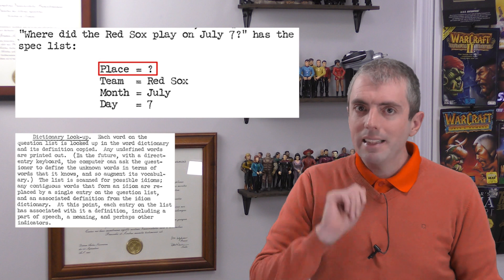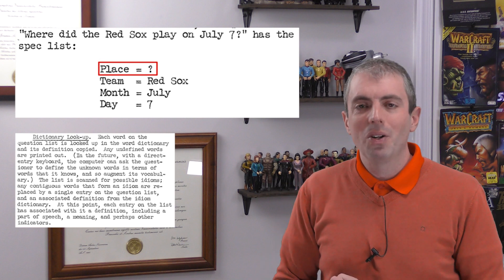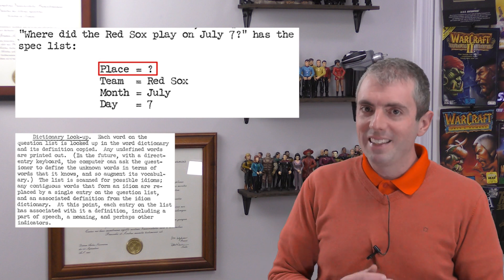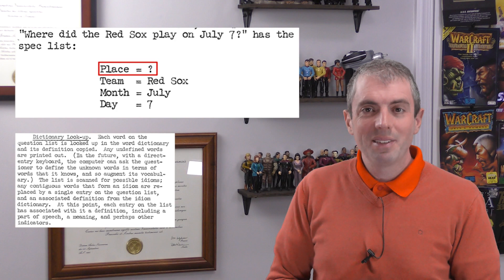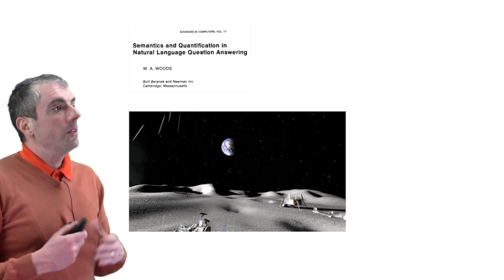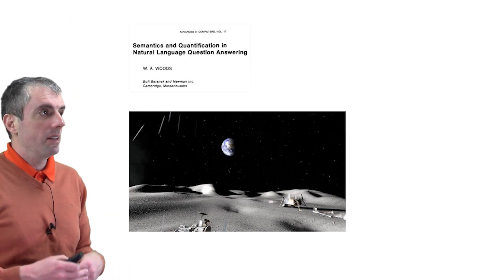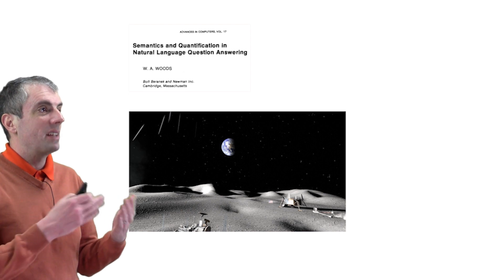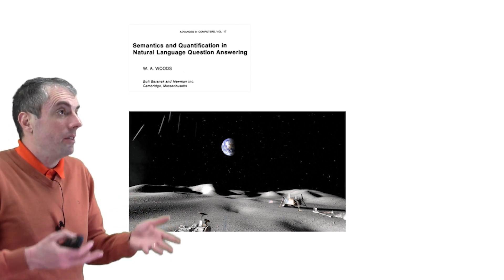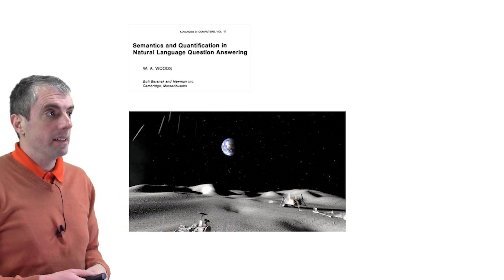To get to the next step, we need to turn to a system called LUNAR, which, as you might guess, was answering questions about the moon. The LUNAR system could answer much more complicated questions, such as those that require averages or averages filtered by some criterion.